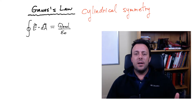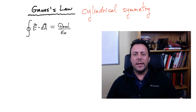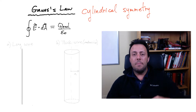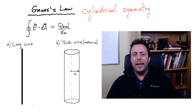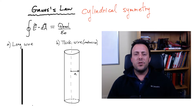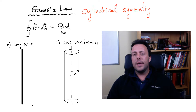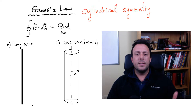I now want to use Gauss's law for cases that have cylindrical symmetry. Let's look at a case where we have a very long thin wire, and another case where we have a thicker wire that has a uniform charge density through it. Let's see how we can calculate the electric field using Gauss's law for cases that have cylindrical symmetry.